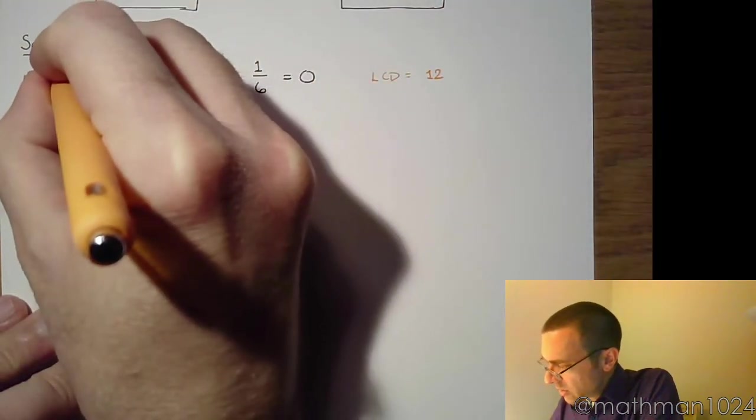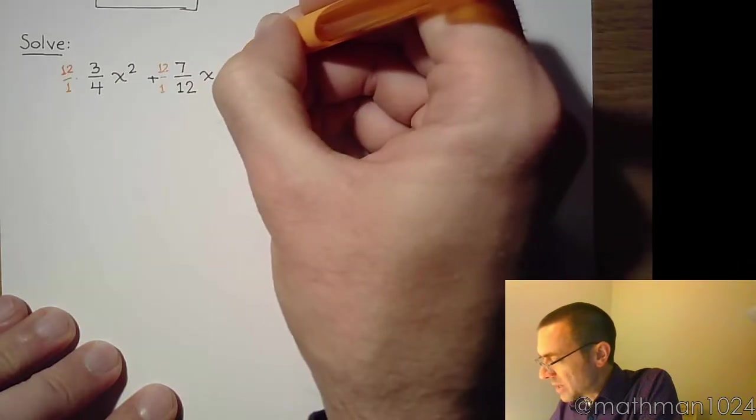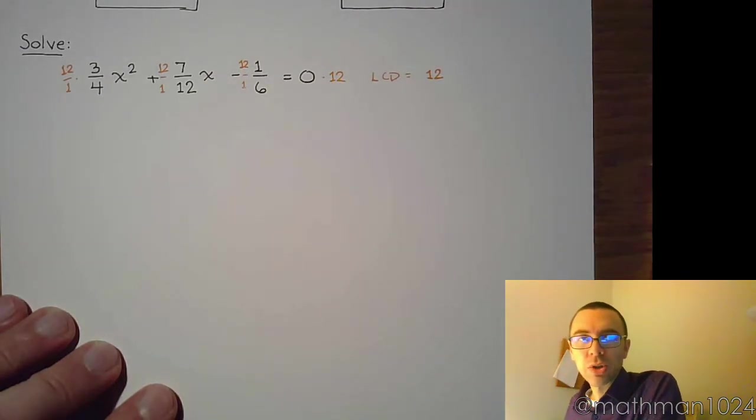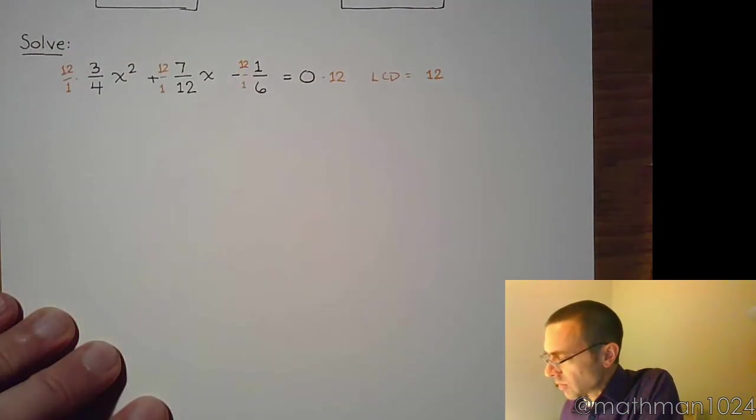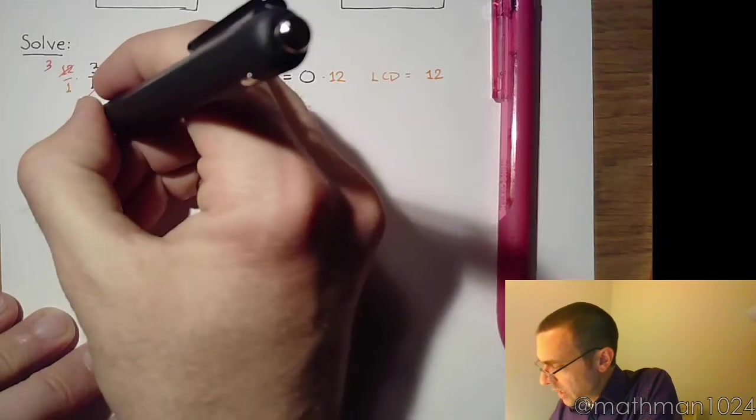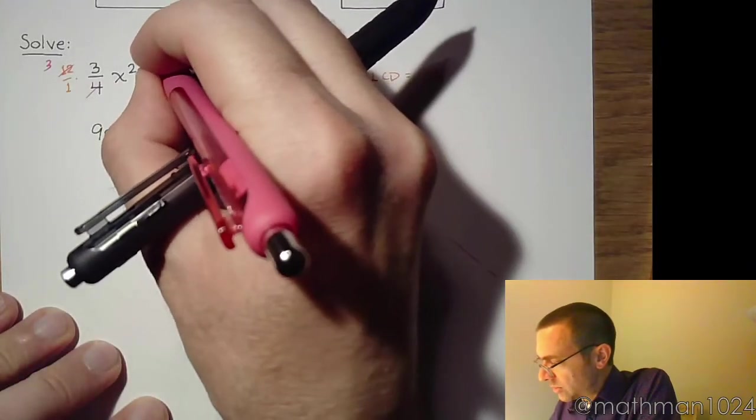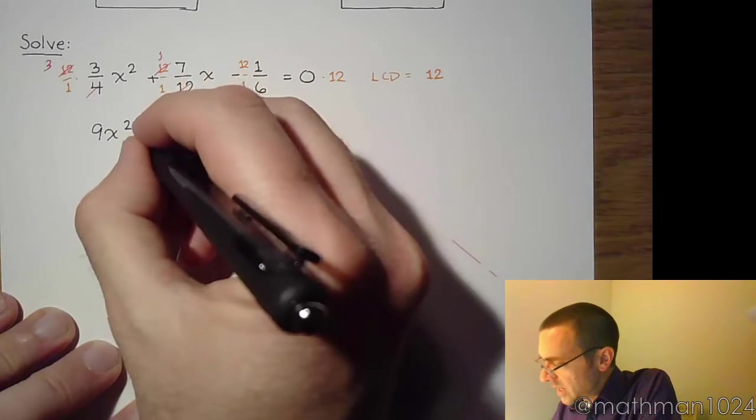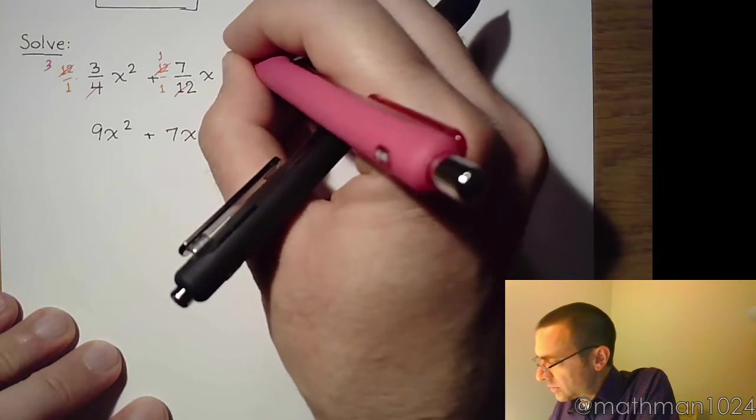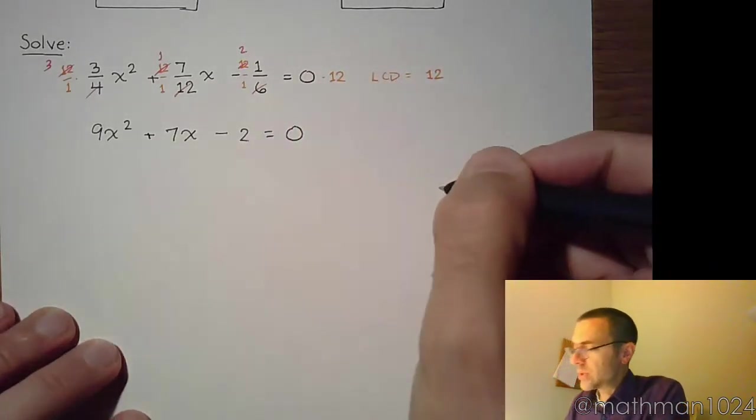So let's multiply everything here times 12. And we can write this as 12 over 1. Maybe that makes it a little bit easier for us to see what to do. So on the left side here, this 4 is going to reduce with the 12 to give us 3. So 3 times 3x squared gives me 9x squared. 12 goes into 12 once, so we get 7x. And 6 goes into 12 twice, and we have minus 2. And of course, 12 times 0 is 0.